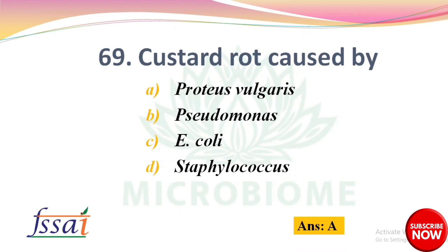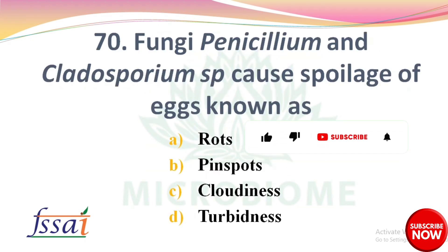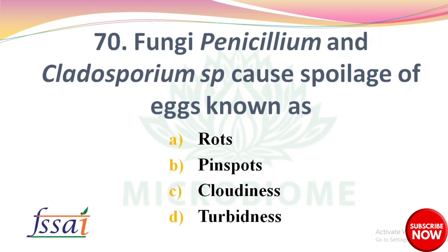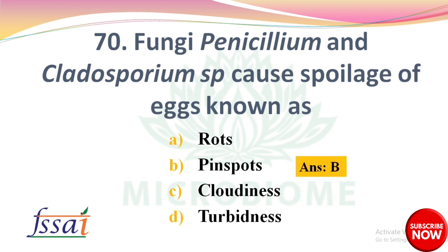Custard rot is caused by? Options: A) Proteus vulgaris, B) Pseudomonas, C) E. coli, D) Staphylococcus. The right answer is option A: Proteus vulgaris. Fungi Penicillium and Cladosporium species cause spoilage of eggs known as? Options: A) Rots, B) Pin spots, C) Cloudiness, D) Turbidness. The right answer is option B: Pin spots.